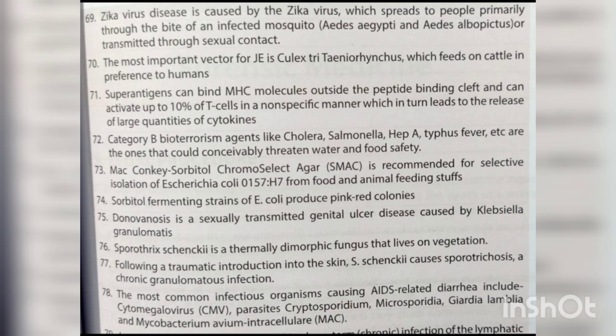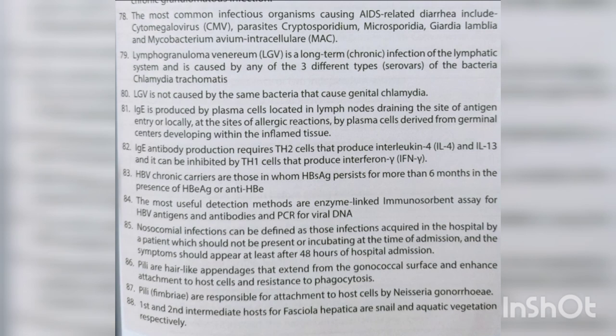The most common infectious organisms causing AIDS-related diarrhea include cytomegalovirus, parasites such as Cryptosporidium, Microsporidia and Giardia, and Mycobacterium avium intracellulare. LGV is a long-term infection of the lymphatic system caused by any of three different serovars of Chlamydia trachomatis.